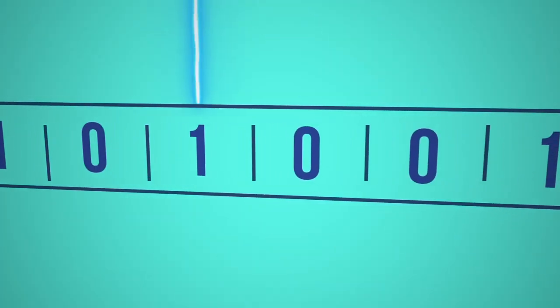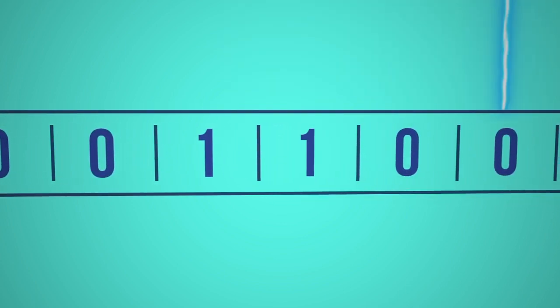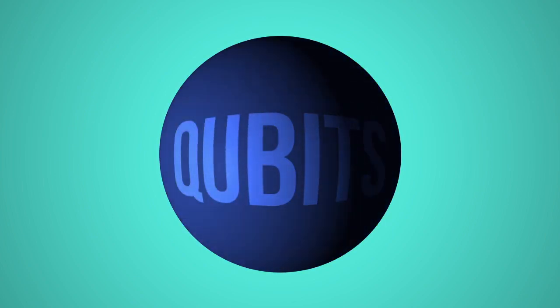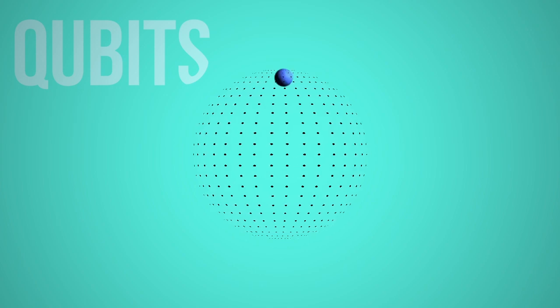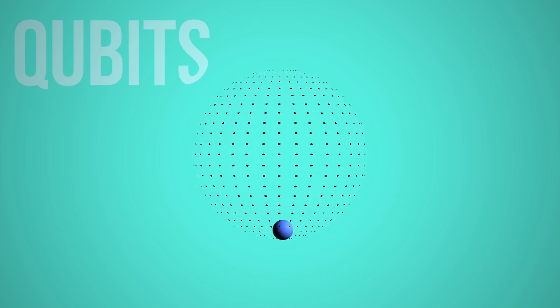You probably know that traditional computers store and manipulate data using bits to signify ones or zeros. Quantum computers use something similar called quantum bits or qubits. If you think of a bit as a sphere, a traditional bit can only be here, one, or here, zero.